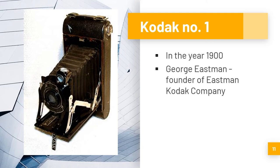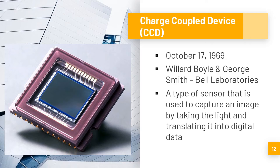In the year 1900, photography became available to everybody. Its fame started with George Eastman, who was the founder of the Eastman Kodak Company. The first camera open to the public was the Kodak No. 1. On October 17, 1969, Williard Boyle and George Smith of Bell Laboratories invented the charge-coupled device, or CCD.